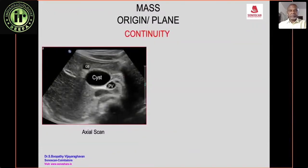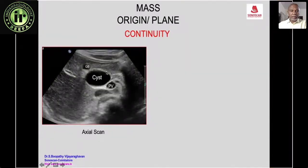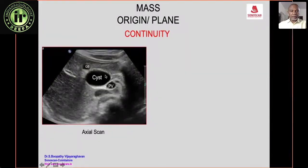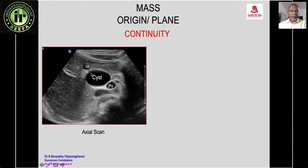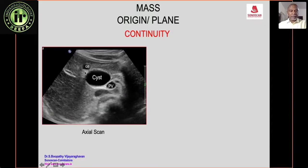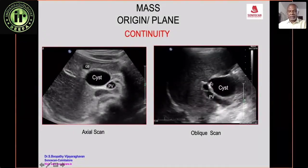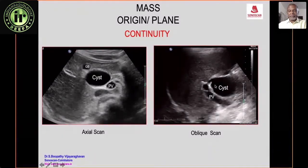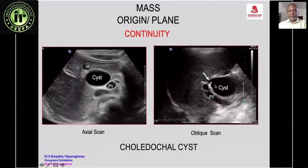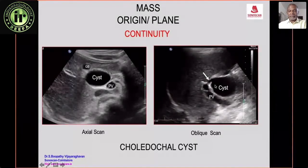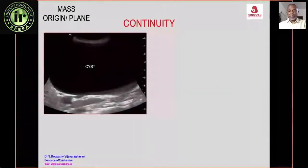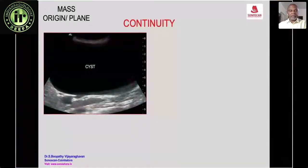The sign of continuity: on a transverse scan of the pancreas and portal vein, a cyst is seen anterior to the portal vein. The cyst is continuous with the common hepatic duct, confirming the diagnosis of a choledochal cyst. Continuity confirms the diagnosis.